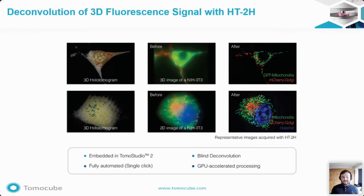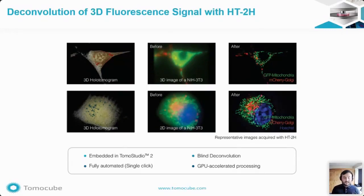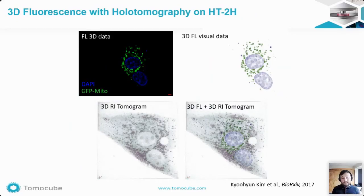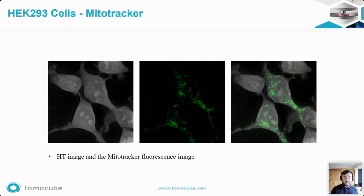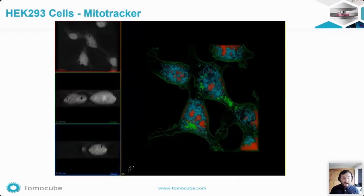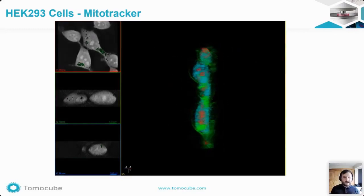It is important to remember that the specificity of labeling organelles with fluorophores is still important. Therefore, on the HT2H microscopes, we have incorporated correlative fluorescence capabilities. What sets the TomoCube microscope apart from competitors is that we generate both 3D QPI and 3D fluorescence data. This is made possible by taking fluorescence Z-slices and applying a deconvolution algorithm, allowing us to output true 3D phase and 3D fluorescence correlative images. In this example, the MitoTracker fluorescence signal overlays with the intracellular features of the holotomography images, and we are able to visualize it in 3D as seen in the video on the right.